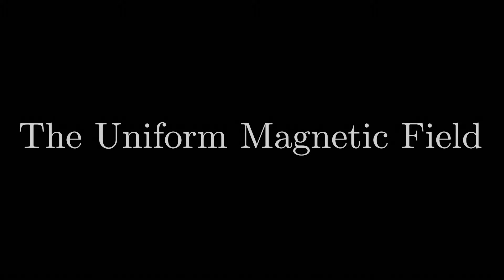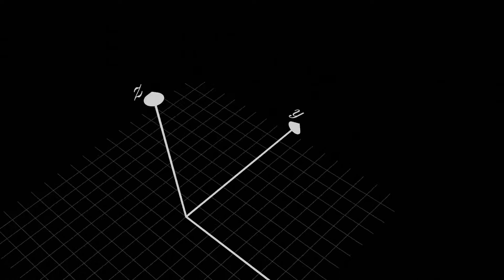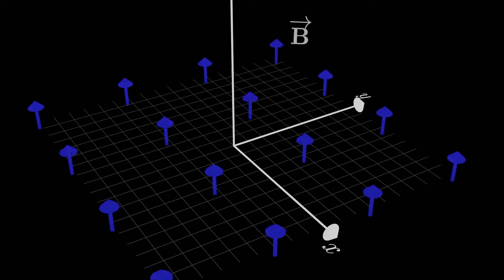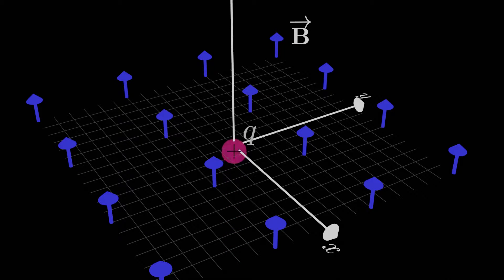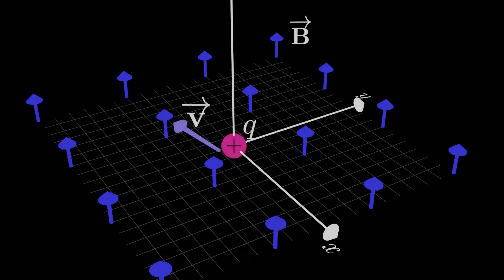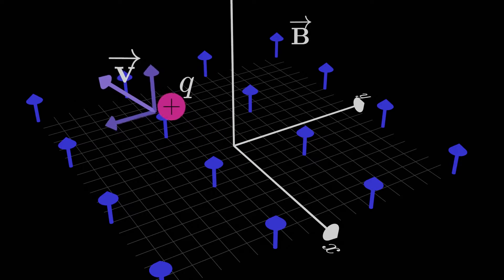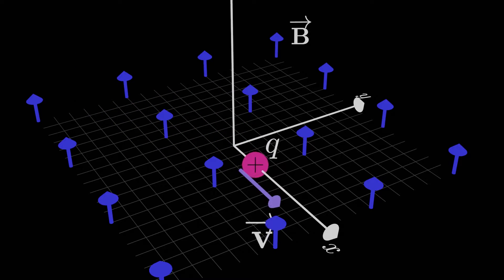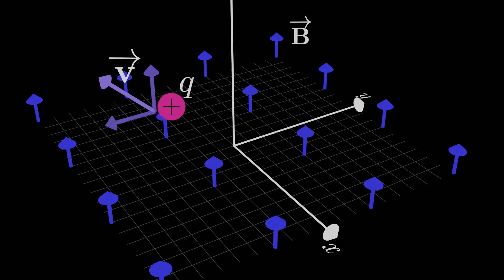Now we'll examine the behavior of a freely moving charge in a uniform magnetic field. It's pretty simple — there are only three possible motions. The particle could start out moving parallel to the magnetic field, or perpendicular to the magnetic field, or neither, meaning it has some velocity component that's parallel to the B field and another that's perpendicular. These are the only three possibilities: parallel, perpendicular, or neither, which is the general case.